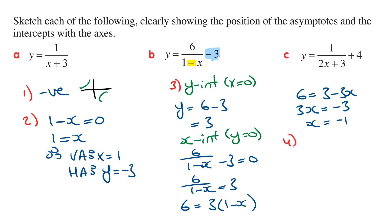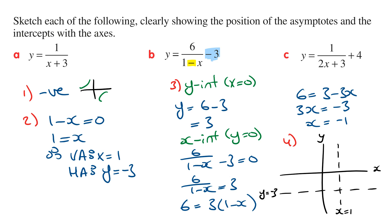Finally, we label all these features on the axes and sketch the graph. Drawing the axes, we draw the vertical and horizontal asymptotes with dotted lines, then mark in the x and y intercepts. Remember the graph is going to be in the second and fourth quadrant, so we connect the dots, giving us the graph of y equals 6 on 1 minus x minus 3.